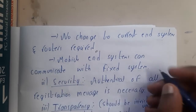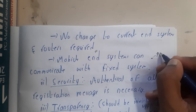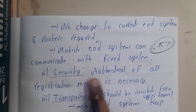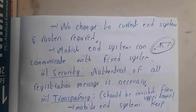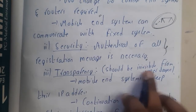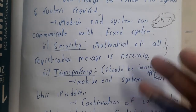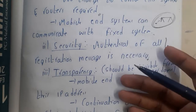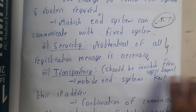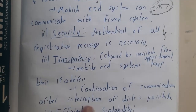Mobile end systems can communicate with fixed systems — your device connects wirelessly, which is in turn connected by wires to other devices. Security is also addressed: authentication of registered users, message encryption, and everything is handled so there are no issues. Transparency should be invisible from the upper layer — just like the OSI model, upper layers do not need to know what the lower layers are using. Mobile end systems keep their IP addresses.